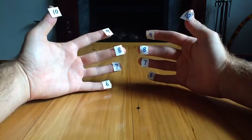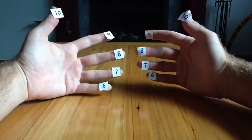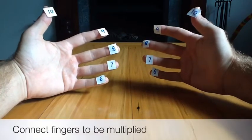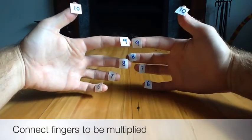To work out an equation what we do is we join the two numbers we're wanting to multiply. So let's start with 9 times 9.